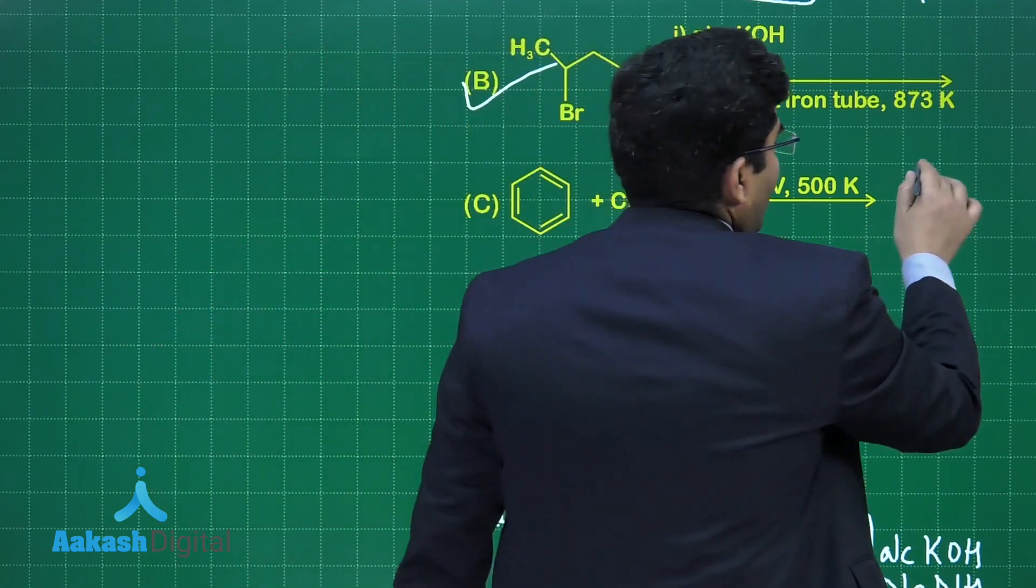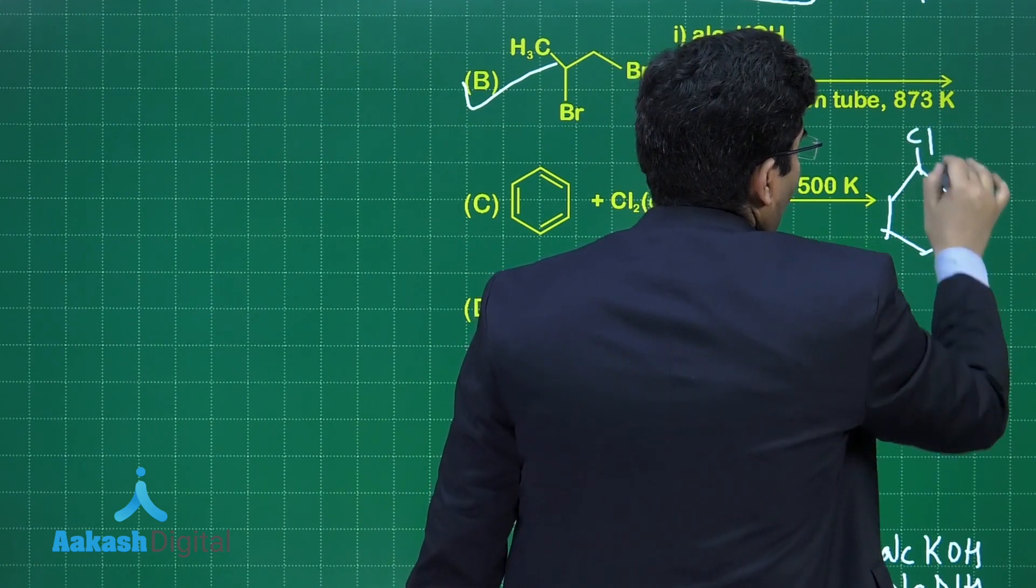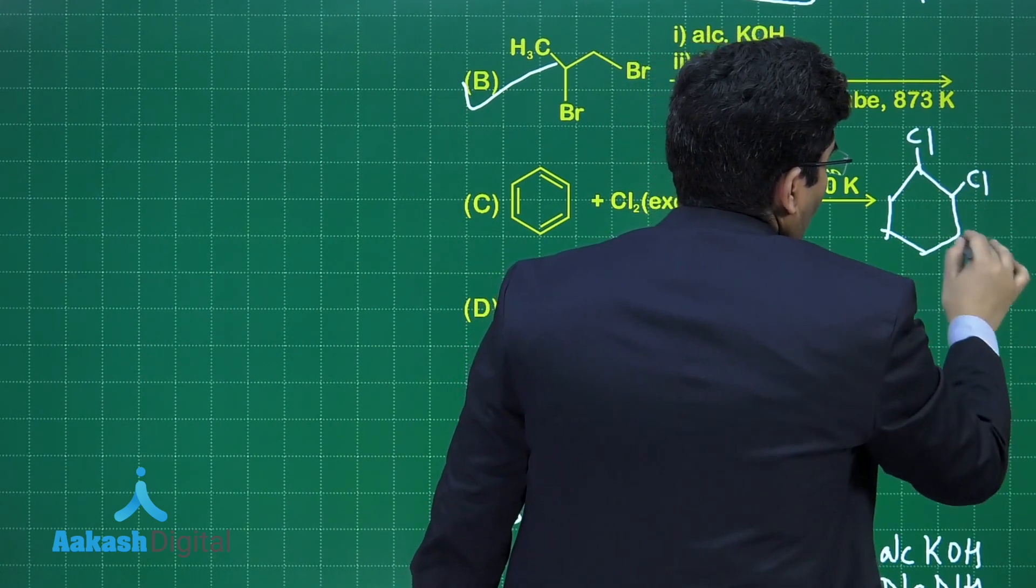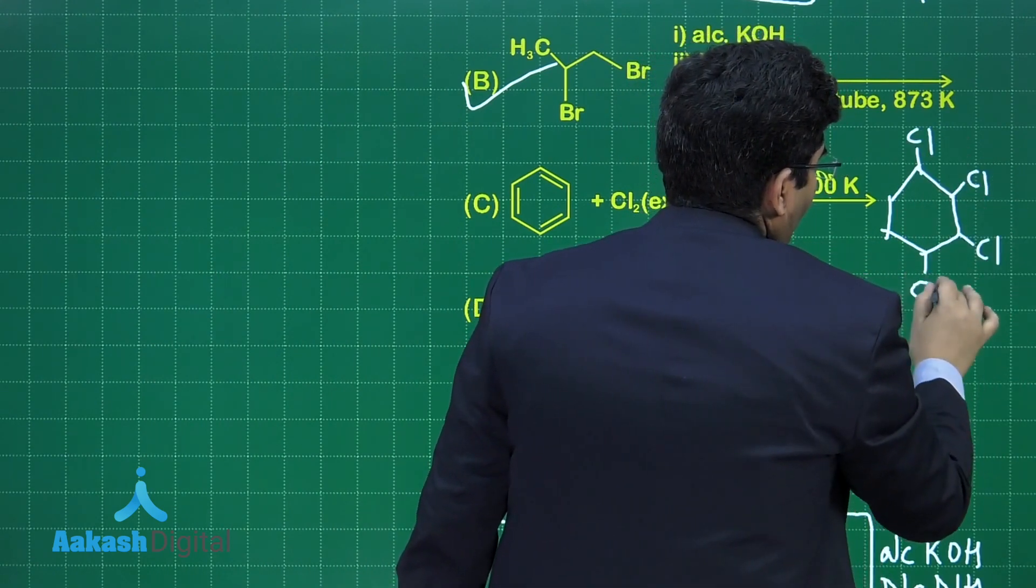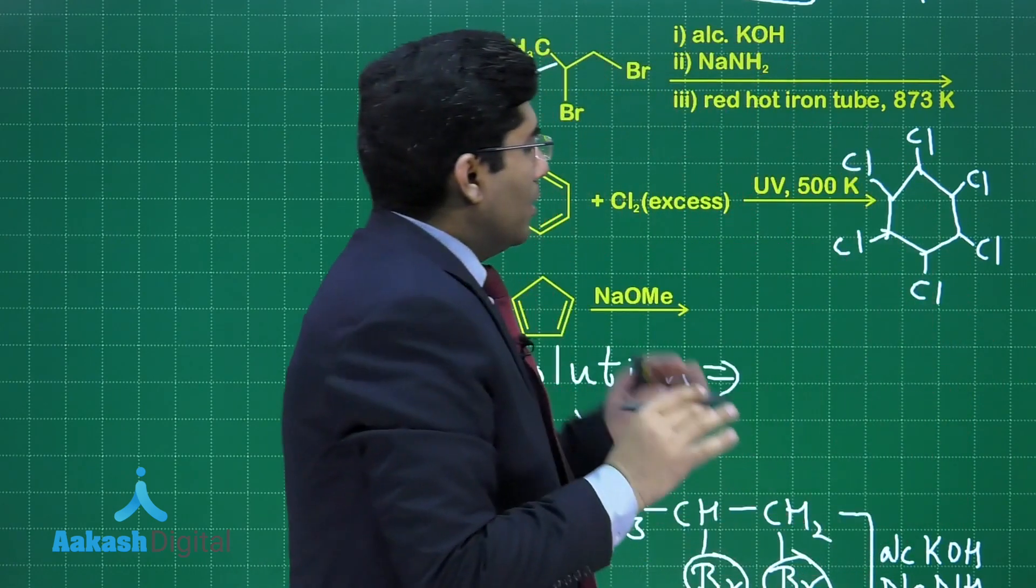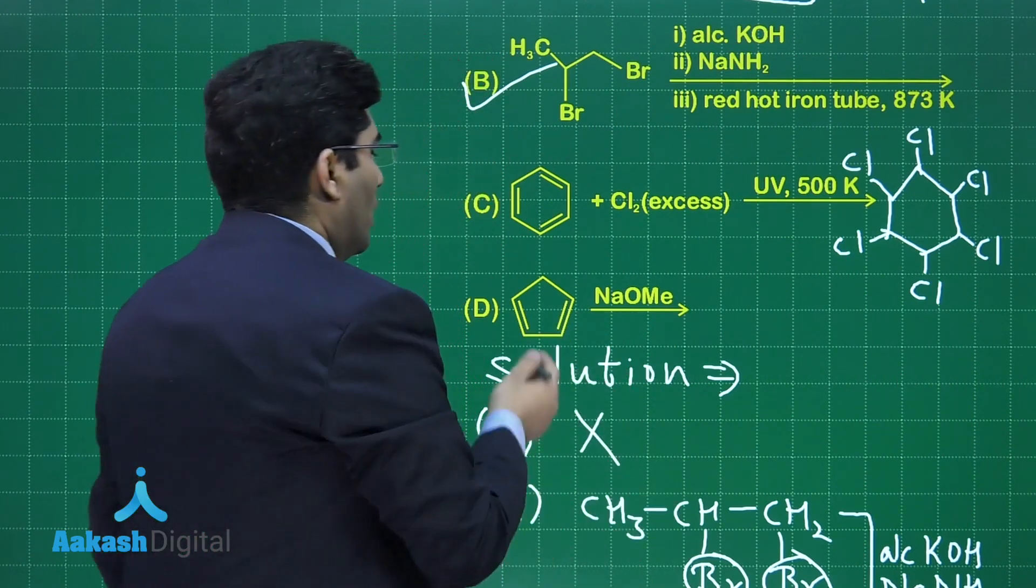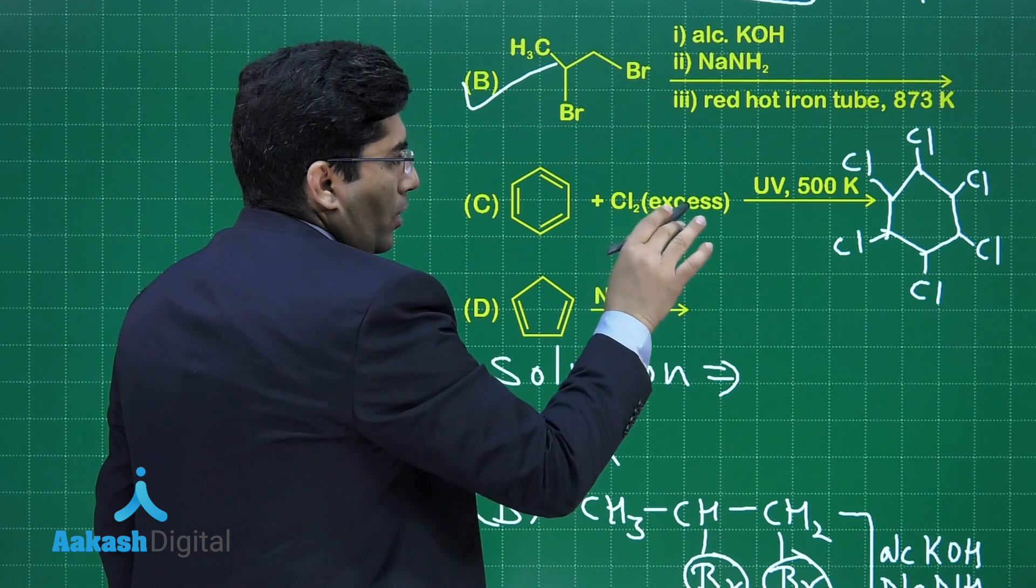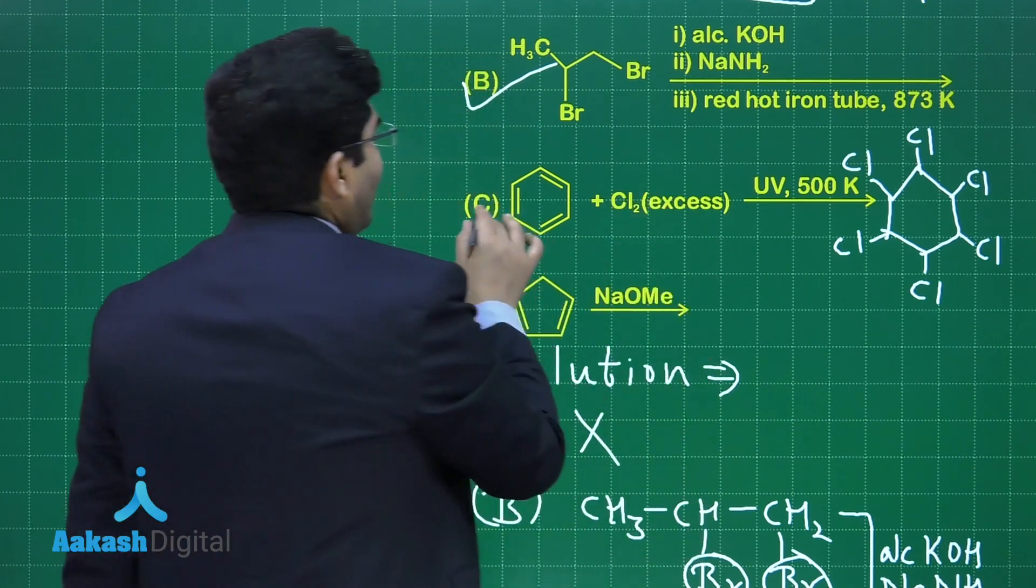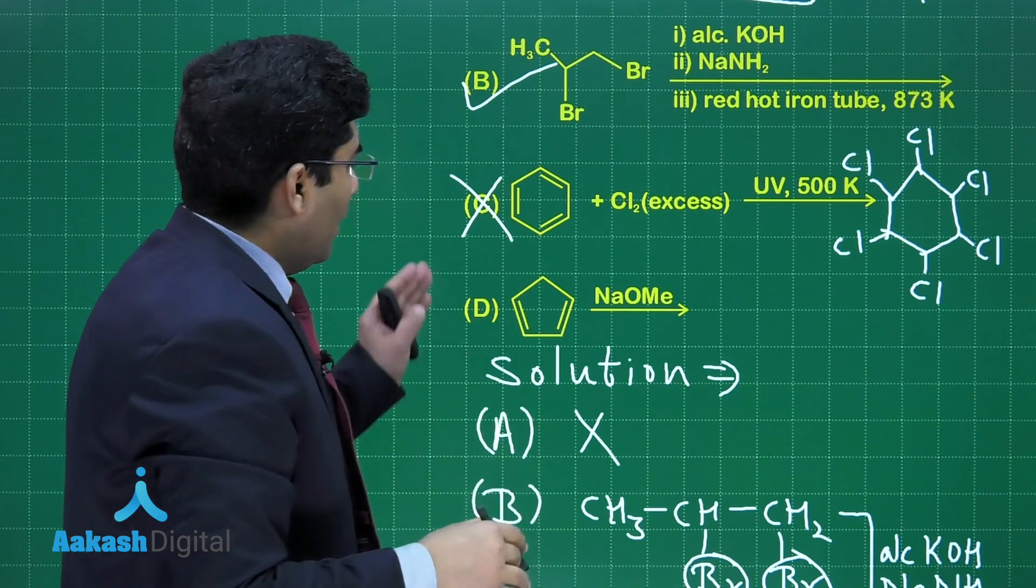We know that when it happens then we get gamma hexane, which has the structure of cyclohexane attached with six chlorine atoms. Now that is not aromatic, so this is also not our answer.